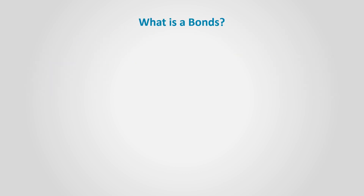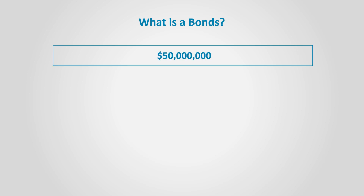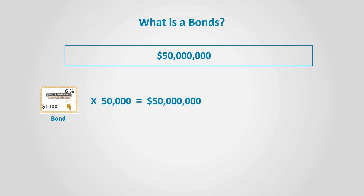What is a bond? A bond is a part of a loan. In our case, the $50 million loan could be sliced into 50,000 bonds each worth $1,000. It is easy to find a maximum of 50,000 investors who are able to invest $1,000 each in a bond.